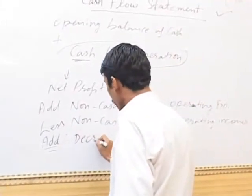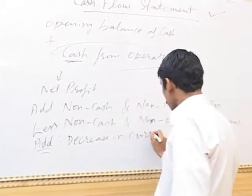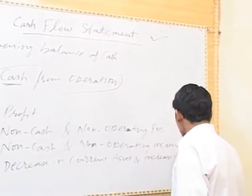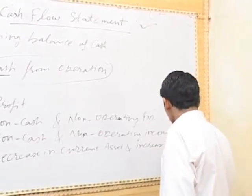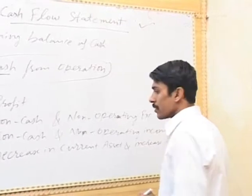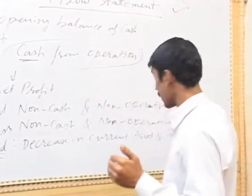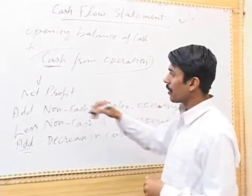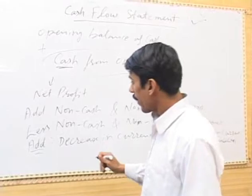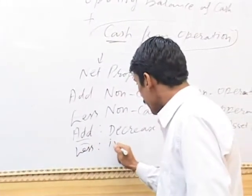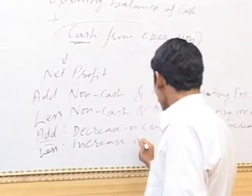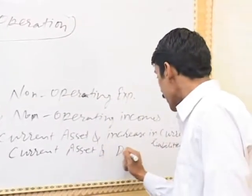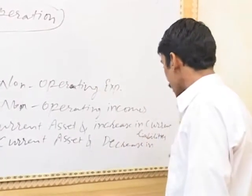From the balance sheet we add decrease in current assets and increase in current liabilities. For example, if there is a 500 increase in current liability, it means it is a debt we have taken, so this is part of cash from operations. We also subtract increase in current assets and decrease in current liabilities.